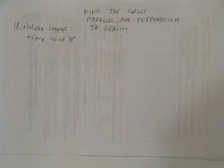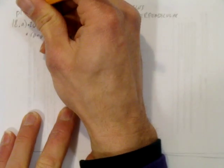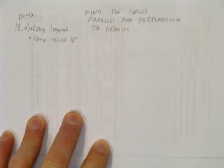In this video, we'll look at finding the forces parallel to and perpendicular to gravity. It helps if you look at the homework page from page 142. This is question 18a. It talks about a 20 kilogram piece of luggage on a ramp that's inclined 28 degrees.